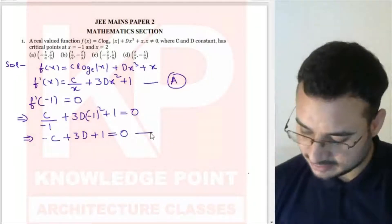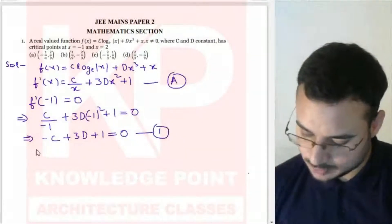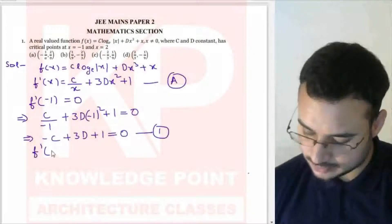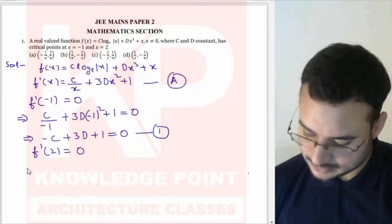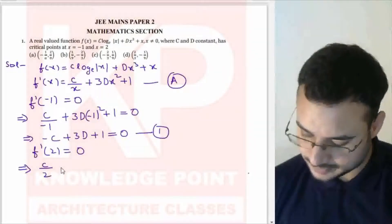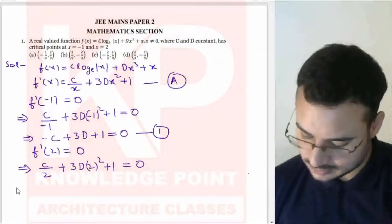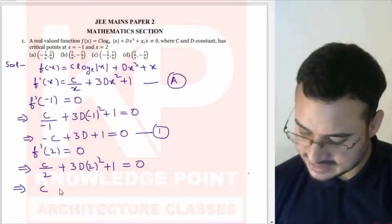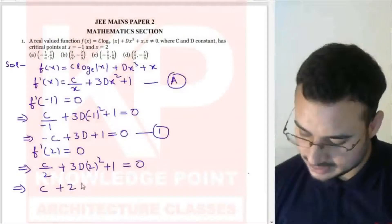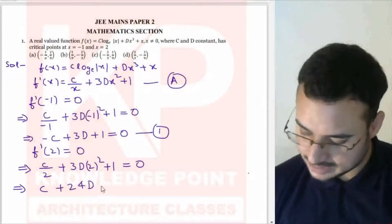Now put x = 2 into equation A. We get c/2 + 3d·(2)² + 1 = 0, which simplifies to c + 24d + 2 = 0. This is our second equation.